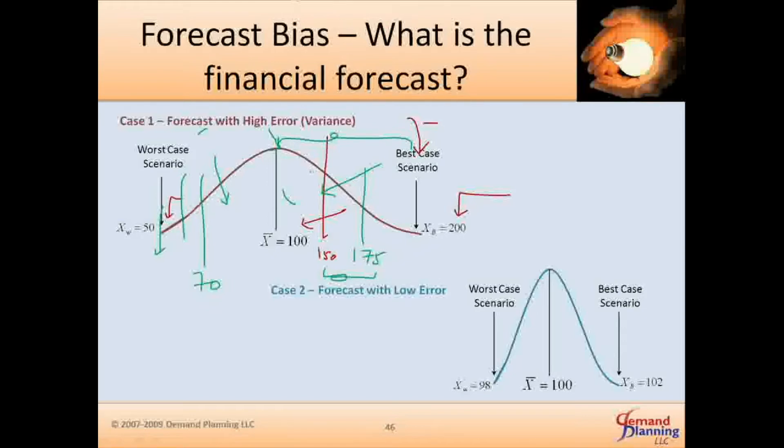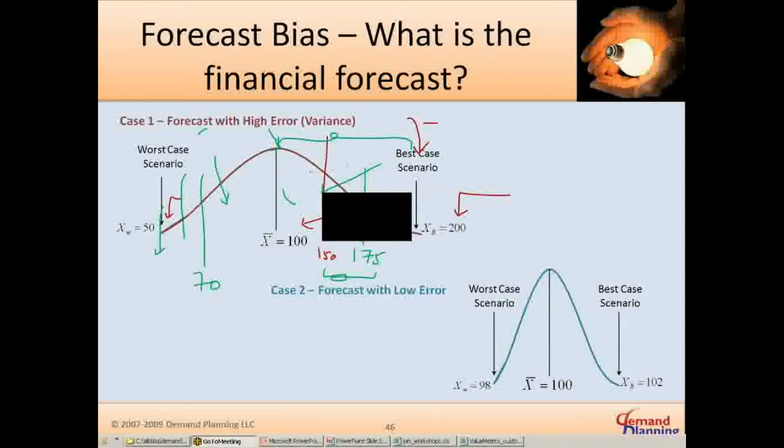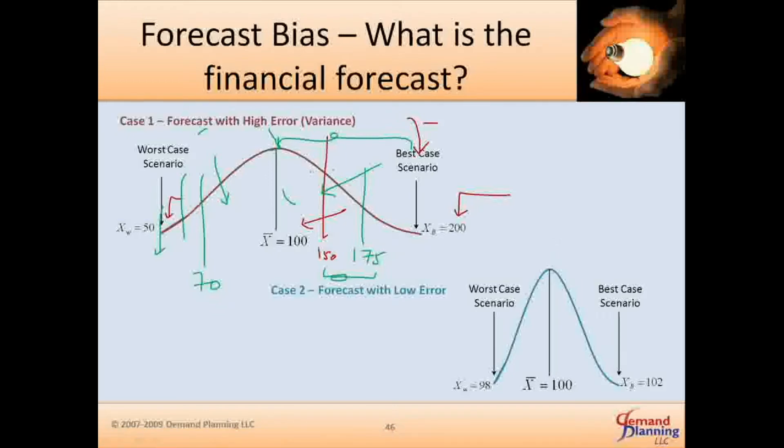So let's look at the other situation here. Let me just put you on mute here. Just one second. Okay, so let's look at this other situation here. In this particular situation, what's happening is you have a demand curve. I mean, you have a demand curve that looks really kind of a very compact demand curve. Average is 100, worst case scenario is 98, best case scenario is 102.